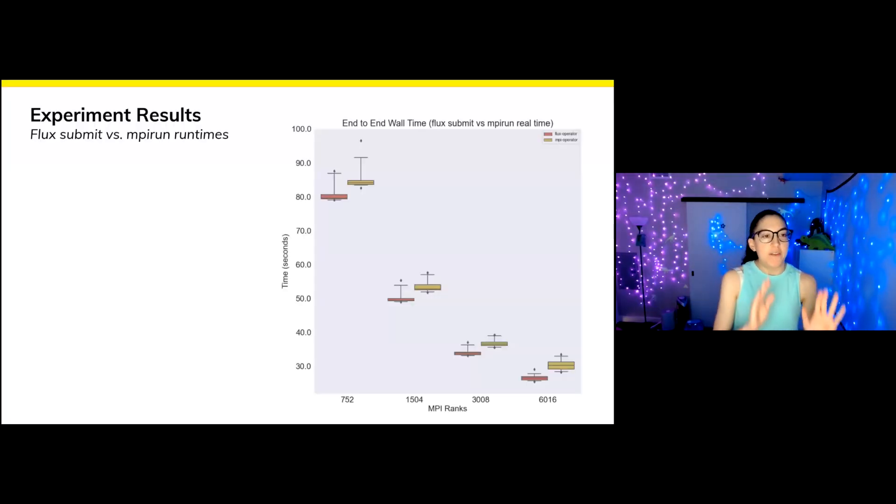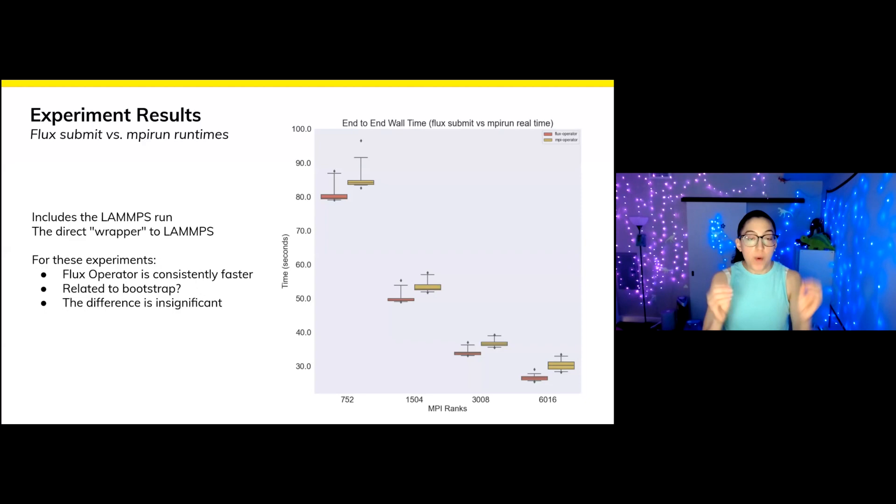So when you remove the setup, let's compare finally apples to apples. How do the run times of these things compare? Specifically, we're going to look at flux submit versus MPI run. This is like if you logged into an HPC center and you wanted to run this with flux directly or with MPI run, that's the command you would type. And this does include the LAMMPS run. This is the direct wrapper to LAMMPS as close as we can get without being inside LAMMPS. And I want to point out that for these experiments, we can't really generalize to everything, but for these experiments, we did note that the flux operator is consistently faster. We think it might be related to the bootstrap or other MPI variables, but the difference is really insignificant.